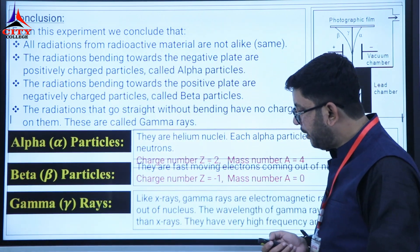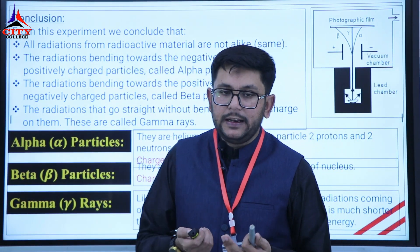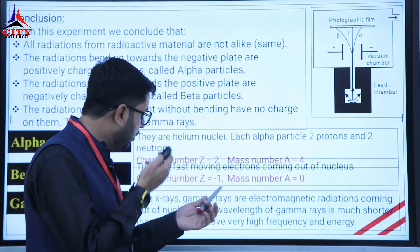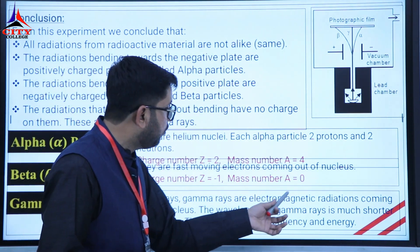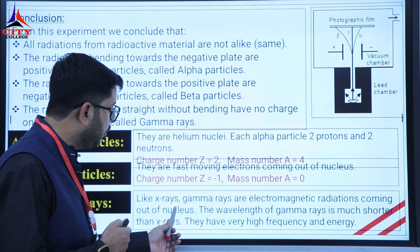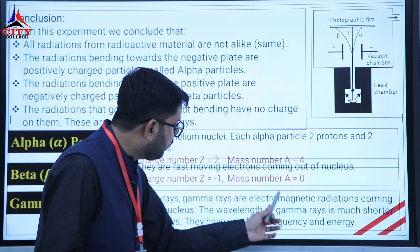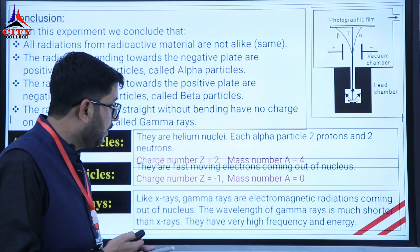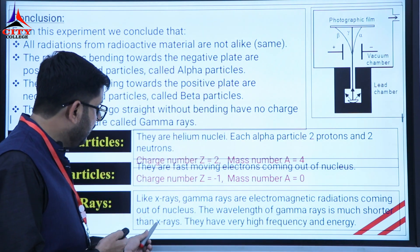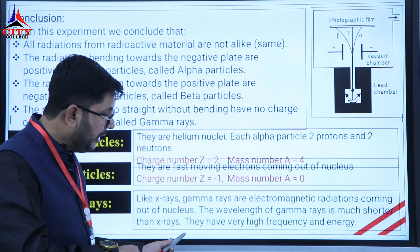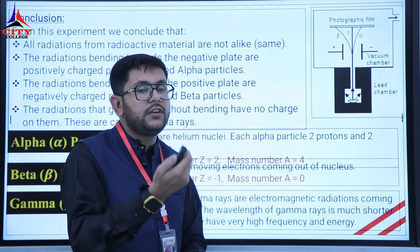Gamma rays are basically electromagnetic radiations, similar to X-rays. They are also emitted from the nucleus. The wavelength of gamma rays is the shortest, their frequency is the highest, and their energy is also maximum.